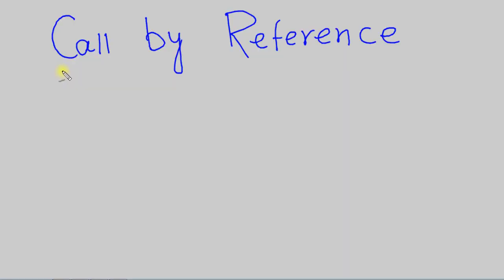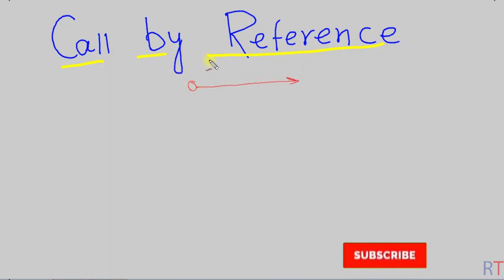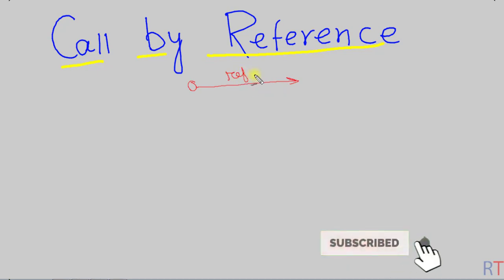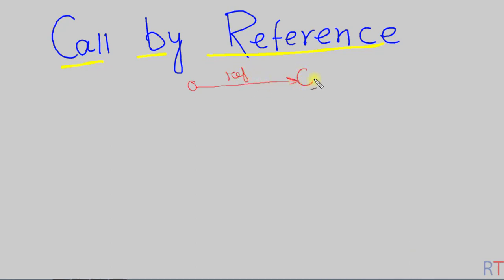In this video we're going to talk about call by reference in Java. Call by reference is where whenever we call a method and pass some parameters to it, the reference of the actual parameter is passed, so any changes made at the formal parameter will be reflected back to the actual parameter.